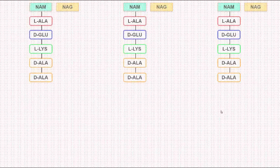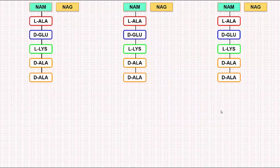Looking at the polymeric structure shown in the figure on screen: the polysaccharides are denoted at the top by square boxes — that is alternate NAM, NAG, NAM, NAG. A 5-amino acid polypeptide is attached to each NAM molecule, running A-G-L-A-A from top to bottom.